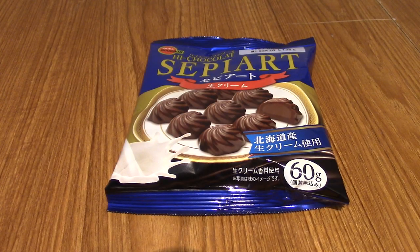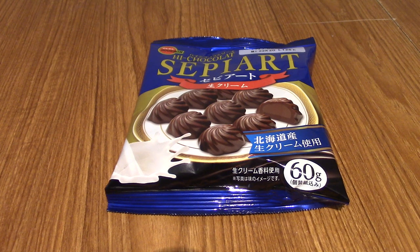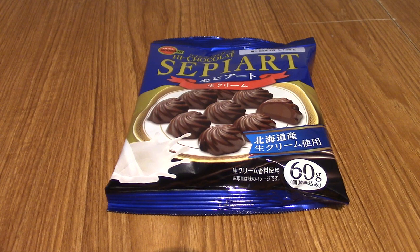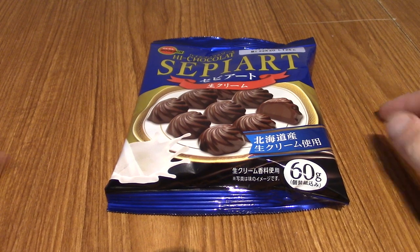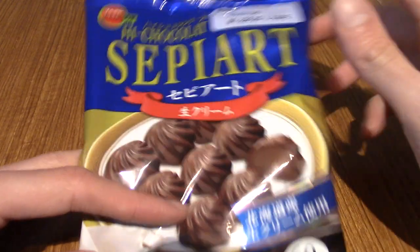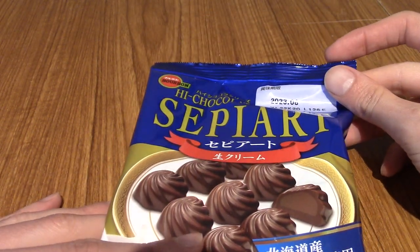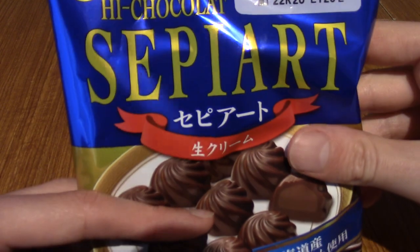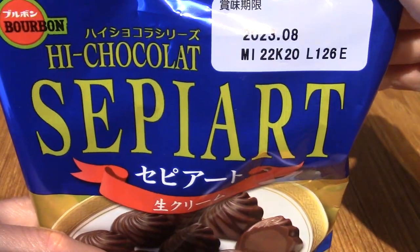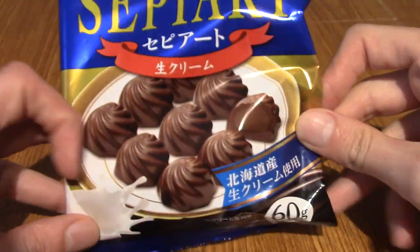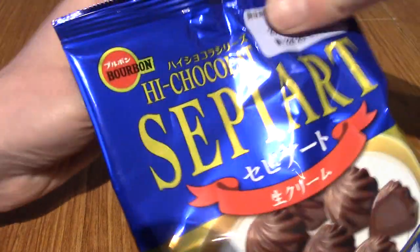Hello and welcome back to another episode of Japanese Snack Reviews. It is episode 14 of the series where I just eat a bunch of Japanese snacks that I got from JapanCrate and other sources, although these are all from JapanCrate. So today we got a bunch of stuff from the February and March crates and we're starting it off with some high chocolate sepi art. This is Hokkaido Cream, like a specific chocolate.